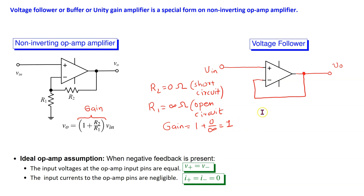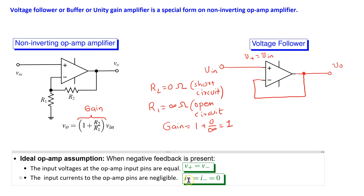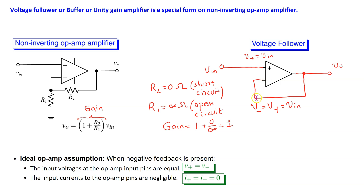We can also establish that this circuit has unity gain by applying the ideal op-amp assumption. We can see that negative feedback is present. The voltage at the positive pin is equal to V_in because the input is applied directly at the positive pin of the op-amp. Applying the ideal op-amp assumption, V_minus equals V_plus equals V_in. However, the negative pin of the op-amp is directly connected to the output, thus output voltage equals input voltage — in other words, the output voltage follows the input voltage.